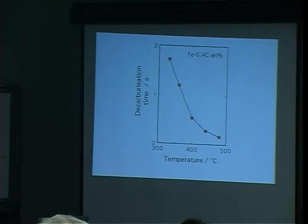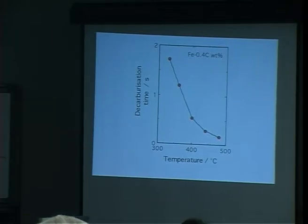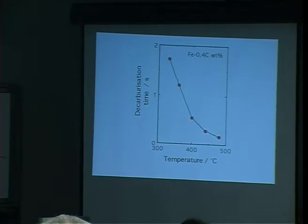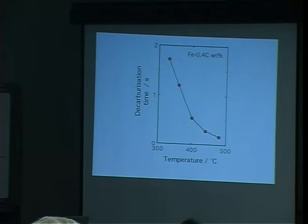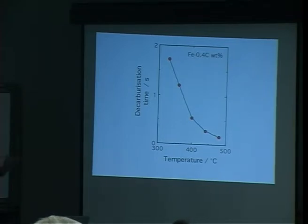Martensite is straightforward — everything is diffusion-less and you can measure the composition after it is formed. With bainite, things can change in a fraction of a second, so by the time you come to make an observation, carbon will have moved. There's no way to do a direct experiment.